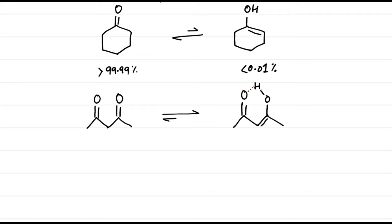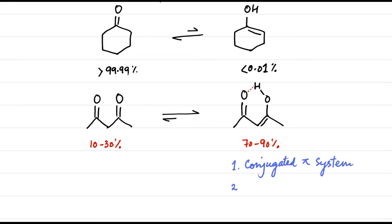The equilibrium concentrations of the diketone and the enol depend on the solvent used, but the enol generally dominates. Two factors contribute to the remarkable stability of the enol in this case. First, the enol has a conjugated pi system, which is a stabilizing factor. Second, the enol can form intramolecular hydrogen bonding interactions between the hydroxyl proton and the nearby carbonyl group. Both of these factors serve to stabilize the enol.